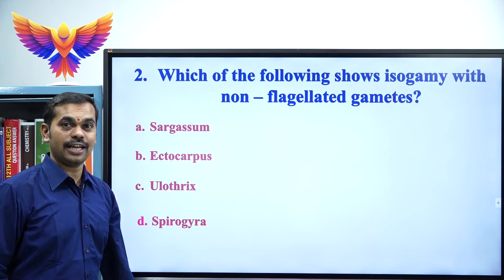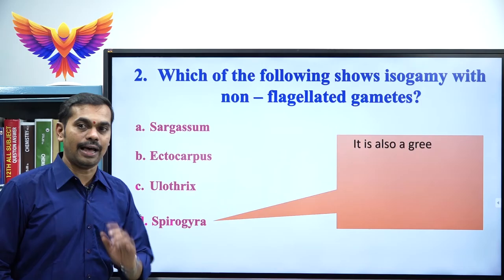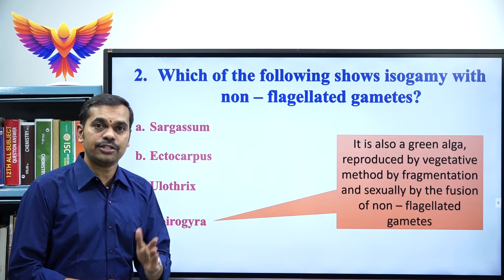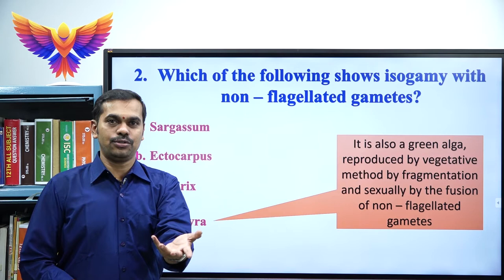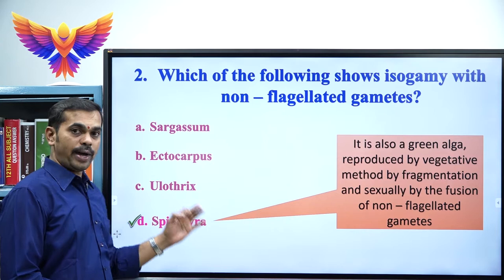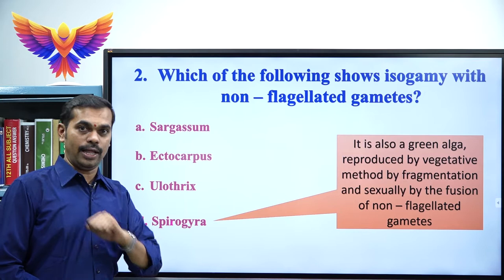Spirogyra is a green alga that reproduces vegetatively by fragmentation — dividing into two or more fragments, each developing into a new organism — and sexually by the fusion of non-flagellated gametes, which is why option D is correct. Sargassum and Ectocarpus are brown algae; Ulothrix is a green alga.